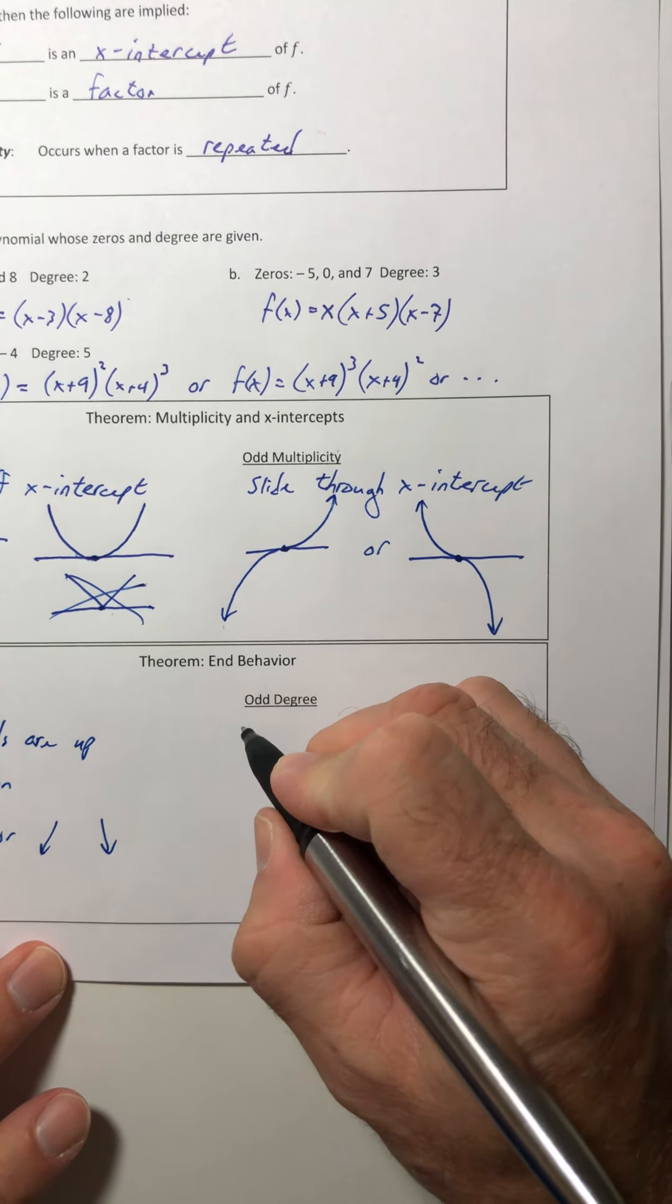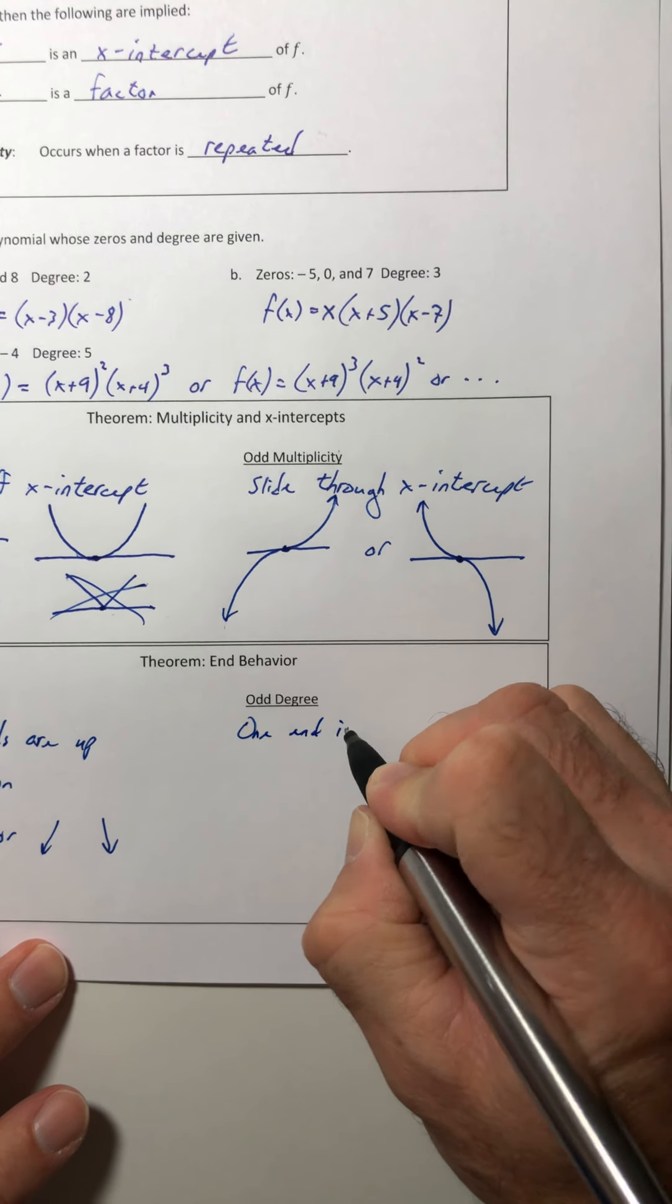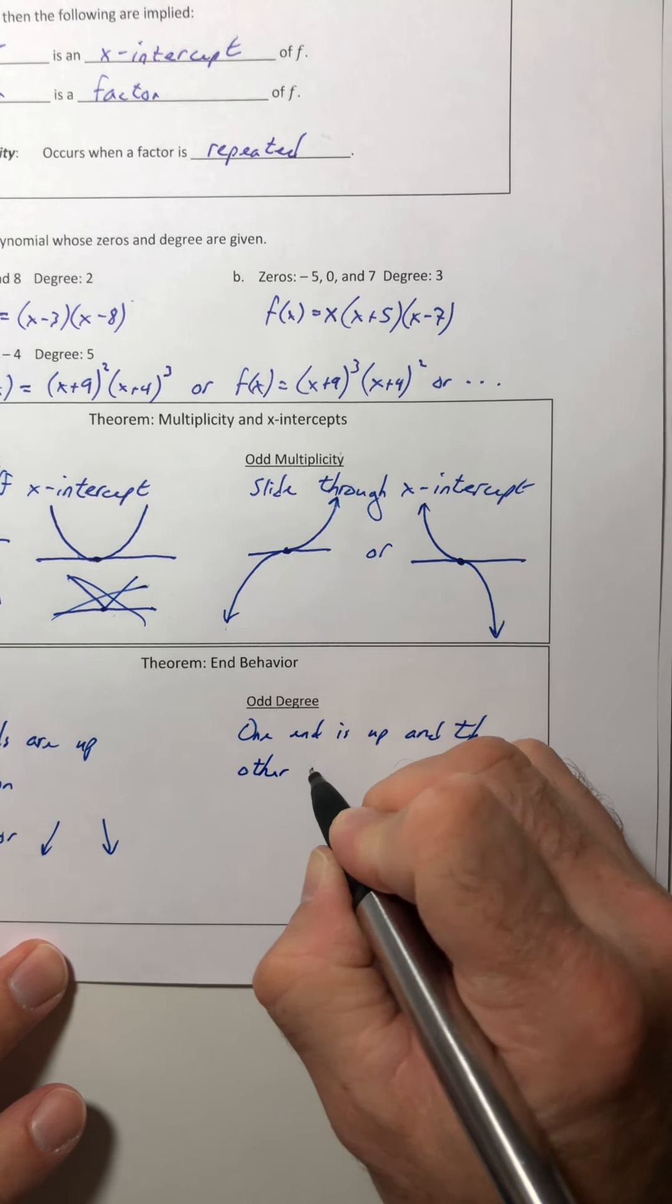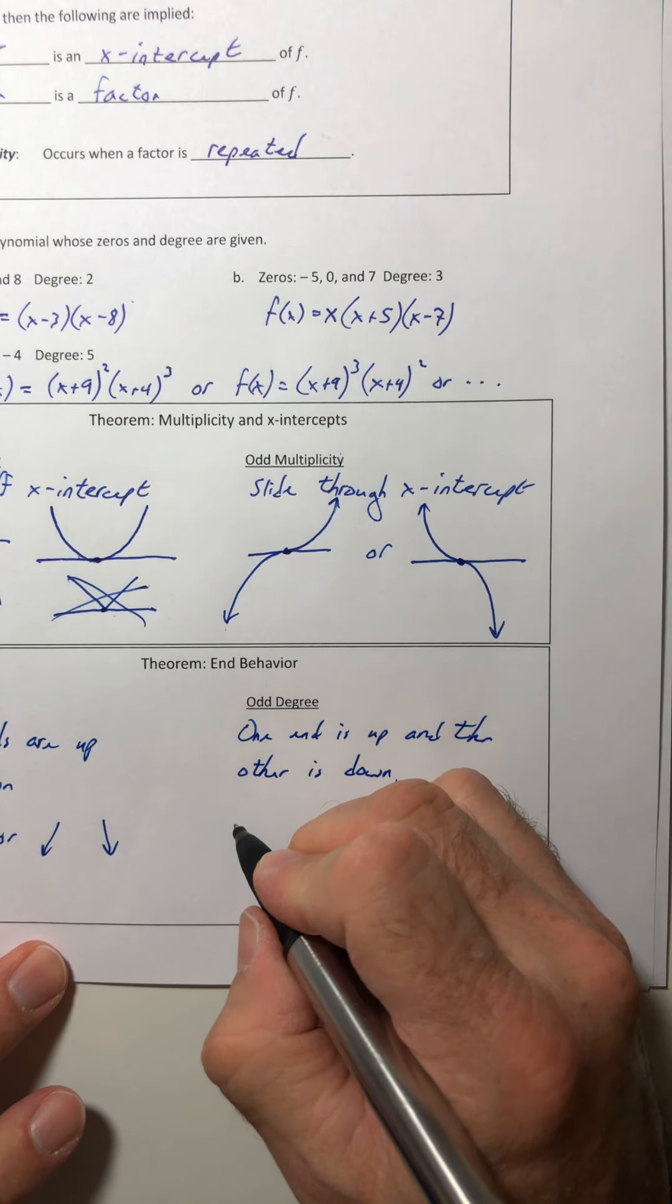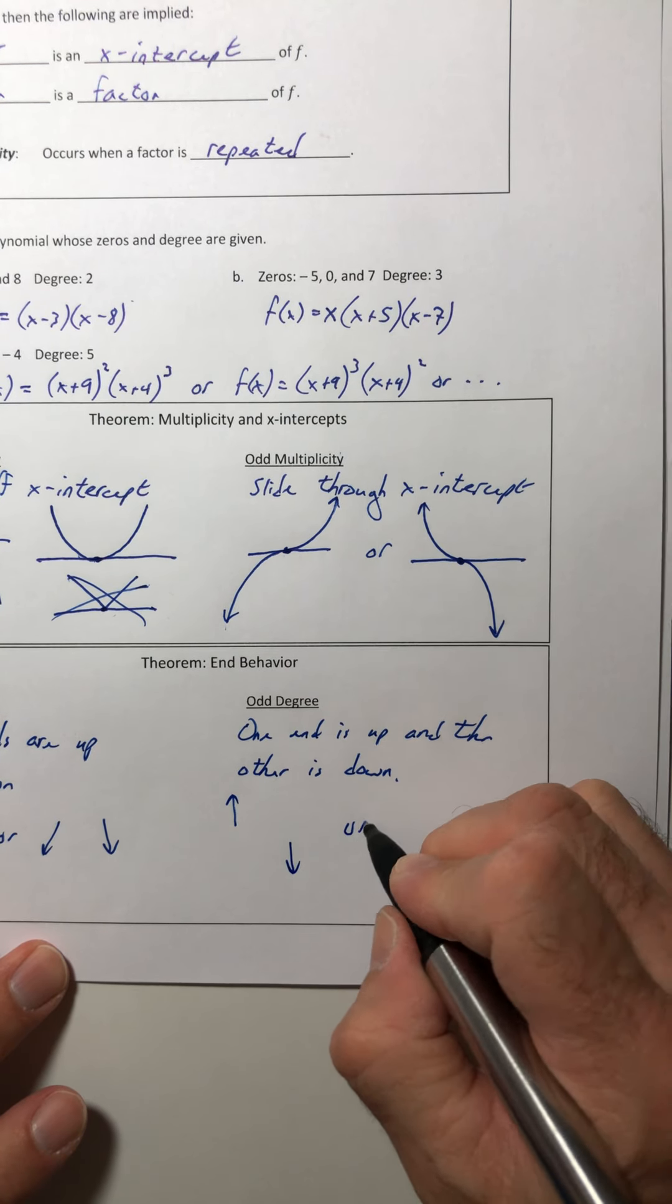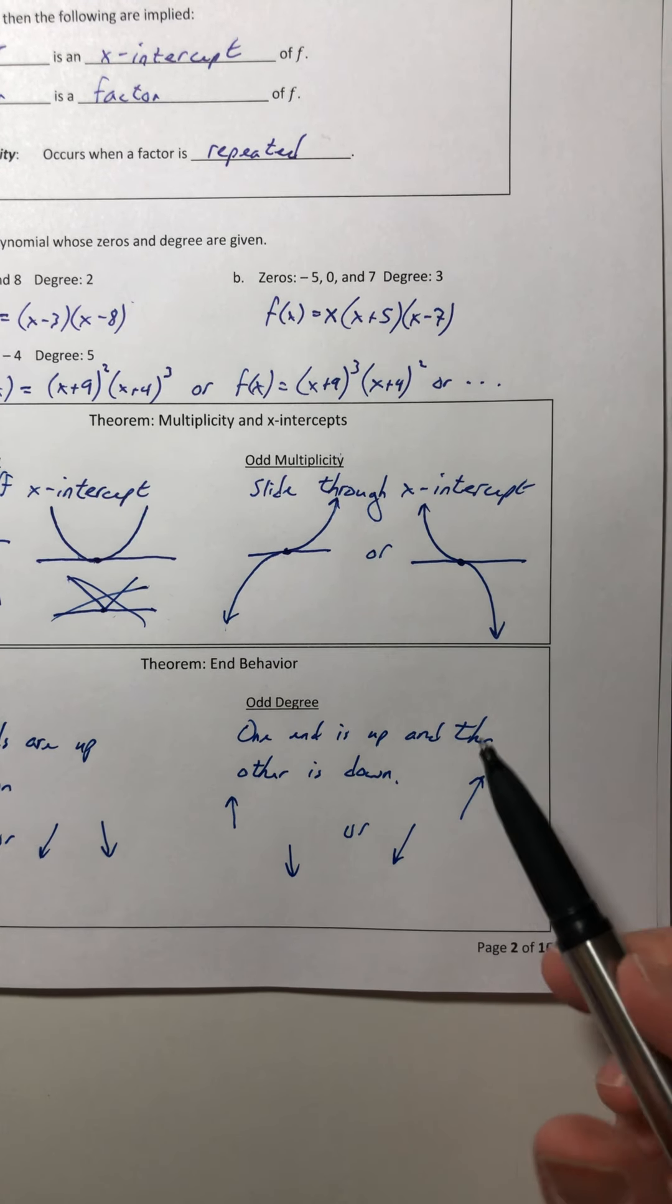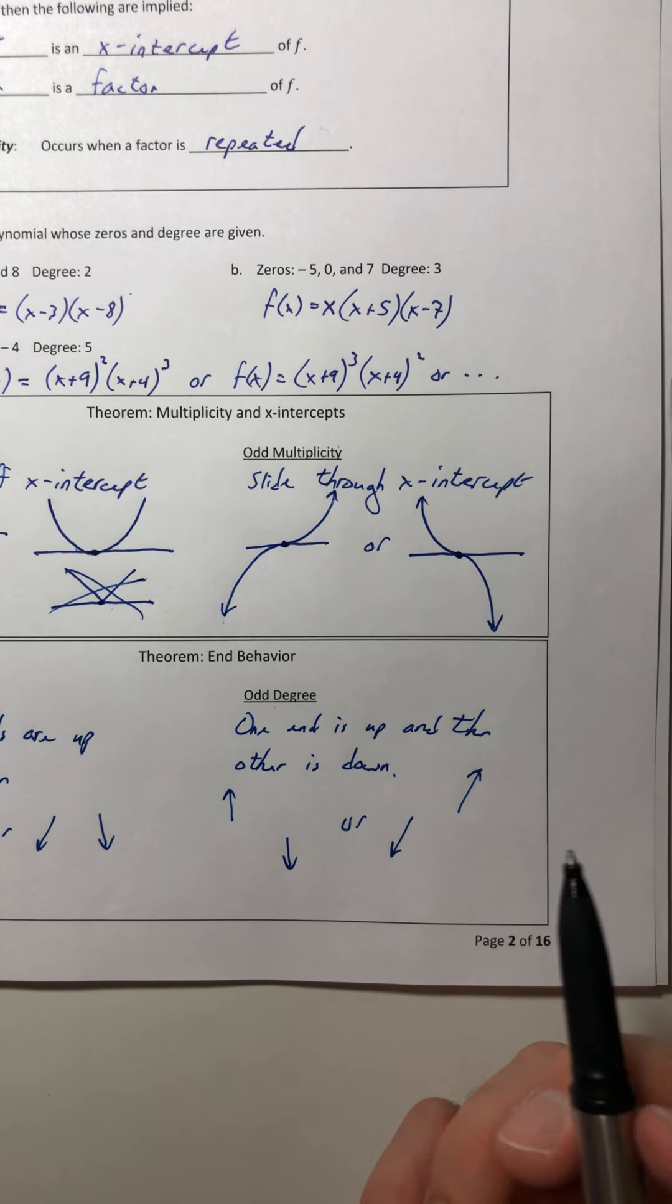All right. So if it's an odd degree, one end is up and the other is down. So it could be up on the left side and down on the right or down on the left side and then going up on the right side. So again, it just depends on the degree.